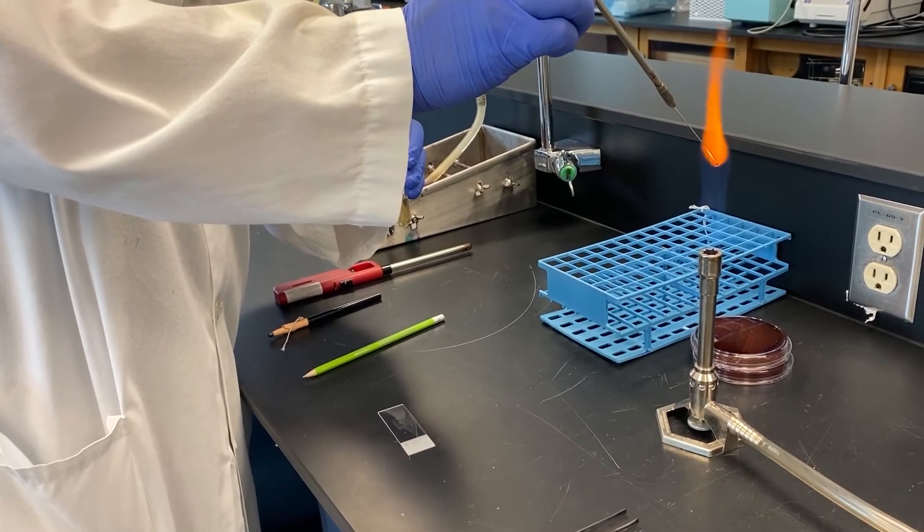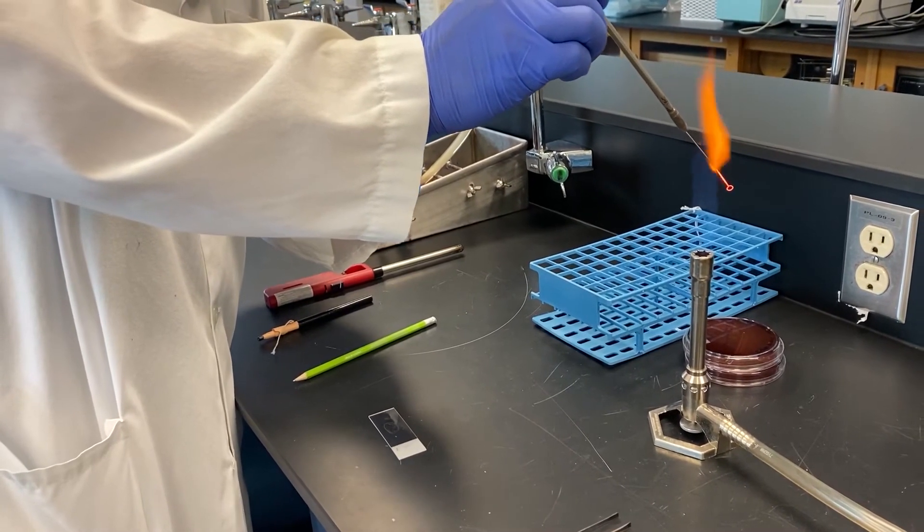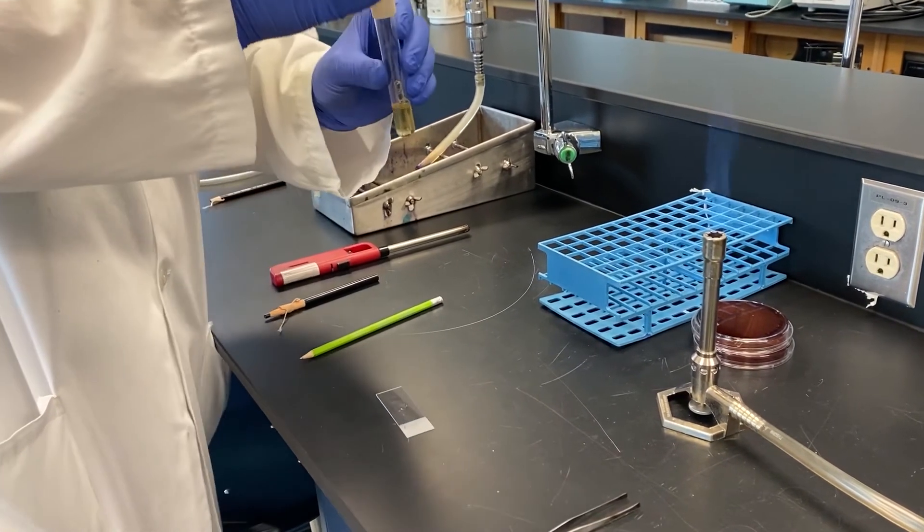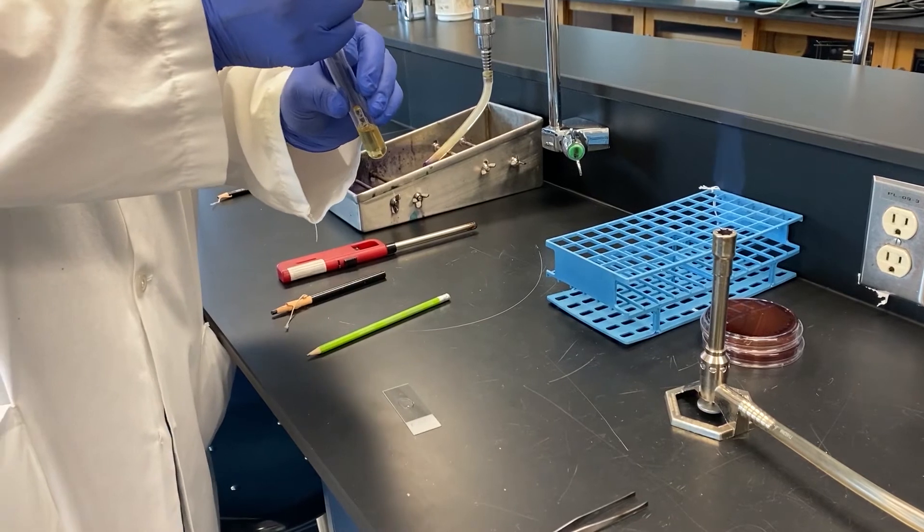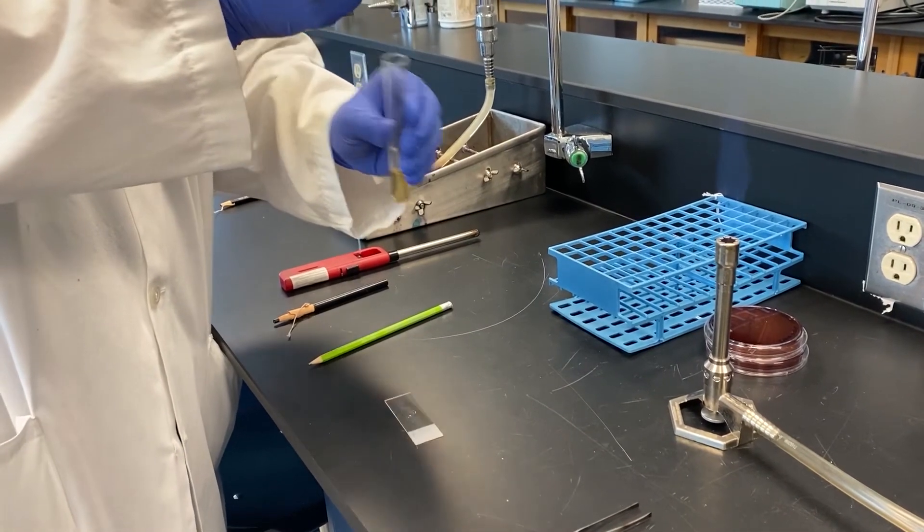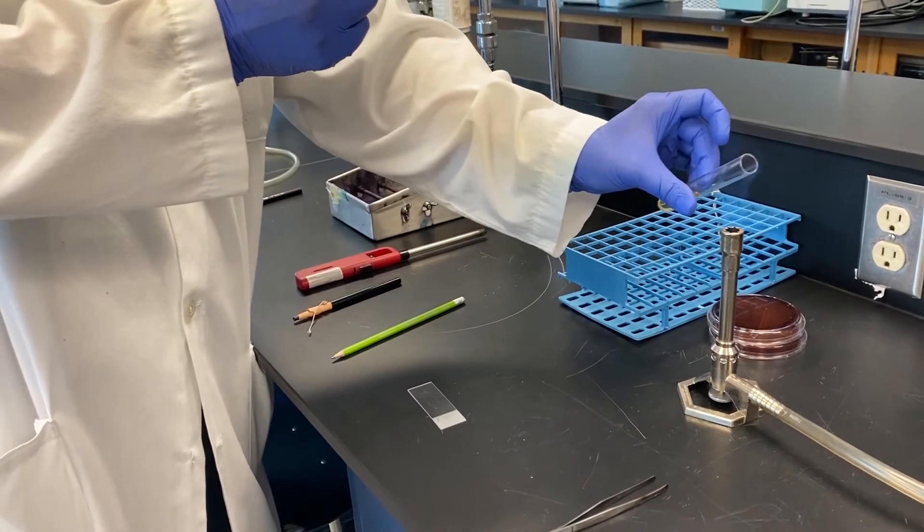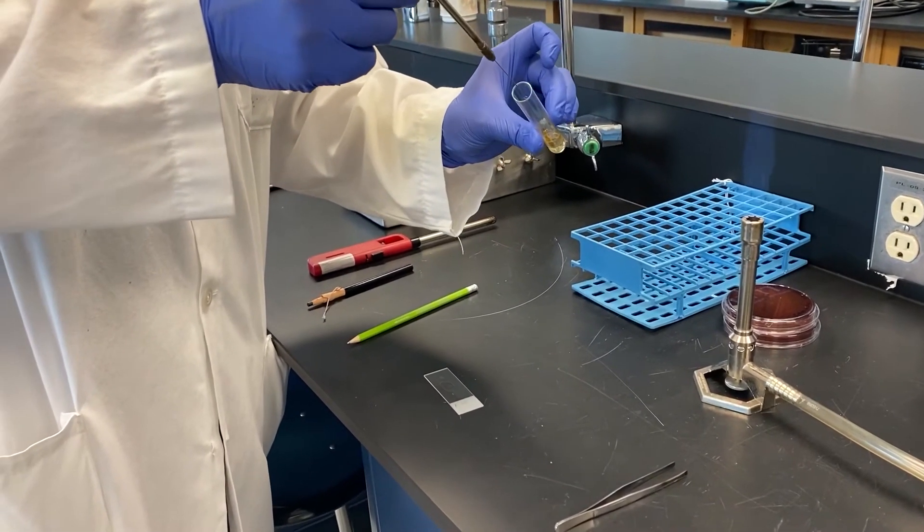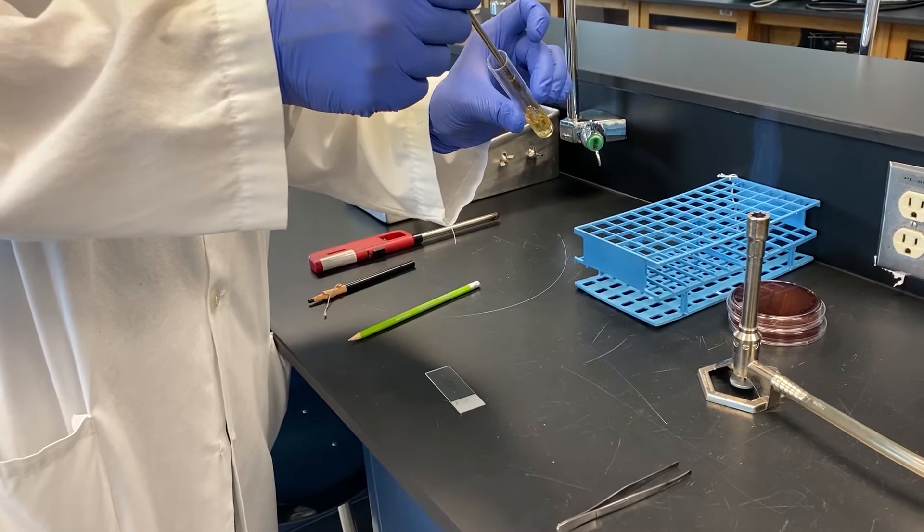Once you have the culture on your loop you can apply it to the circle you drew on your microscope slide. Because bacterial broths tend to be dilute, when preparing a slide from a broth culture usually two, three, or more loopfuls of bacteria are used. Each time using aseptic technique, flaming your loop and the mouth of the tube while collecting the culture.